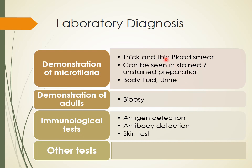For demonstration of microfilaria, you can use thick and thin blood smear, just as we studied in malaria. Microfilaria is quite large compared to other parasitic things seen in blood, so you can easily see it even in an unstained preparation. It can also be seen in body fluids and urine, including chylous urine. Demonstration of adults can be done by biopsy — they are found in the lymph nodes.